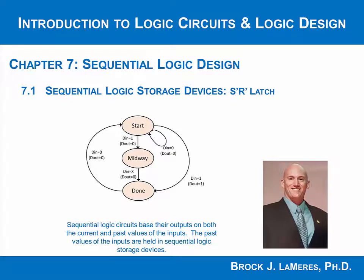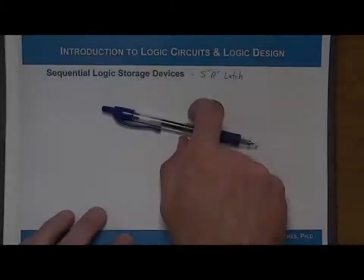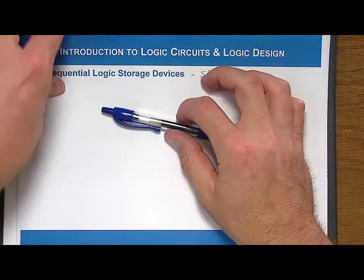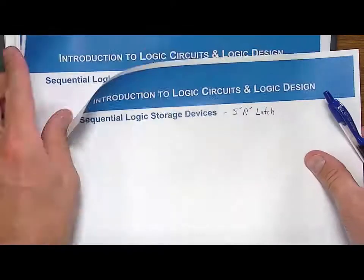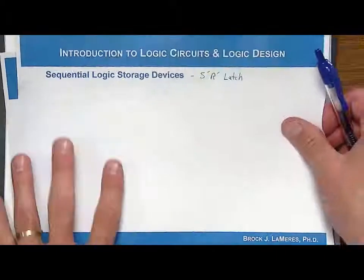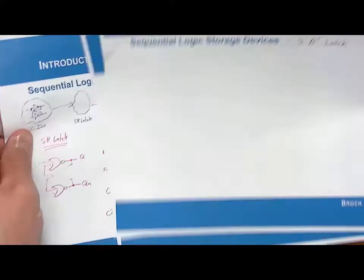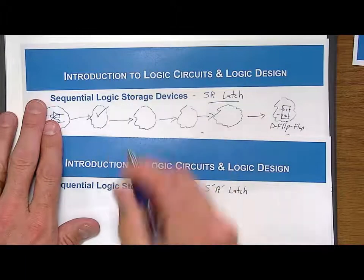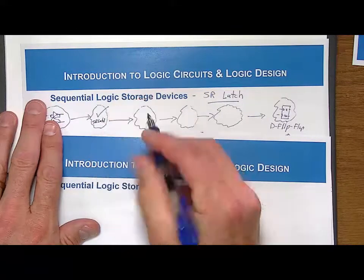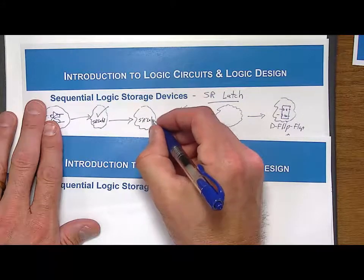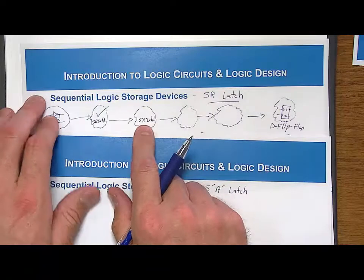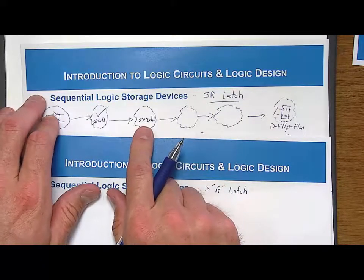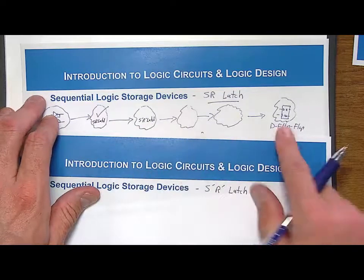Now we look at the next sequential logic storage device, and that's the S̄R̄ latch, or the S-naught R-naught latch. The motivation for this device is that we're trying to ultimately get to the D flip-flop from the cross-coupled inverter pair. We started with this cross-coupled feedback loop, and we are ultimately going to the D flip-flop. We talked about the SR latch, and now we're going to go to the S̄R̄ latch.